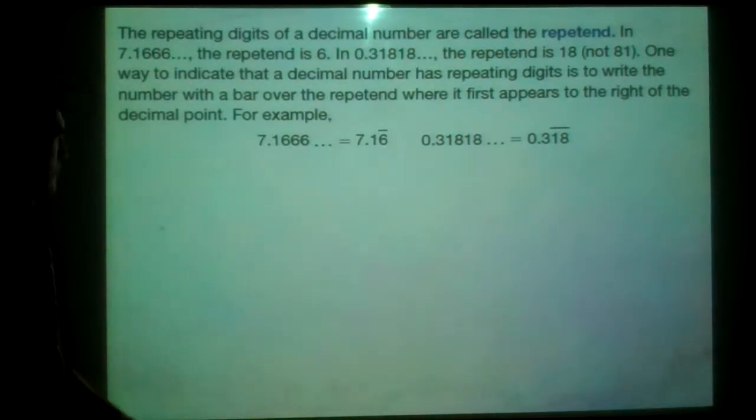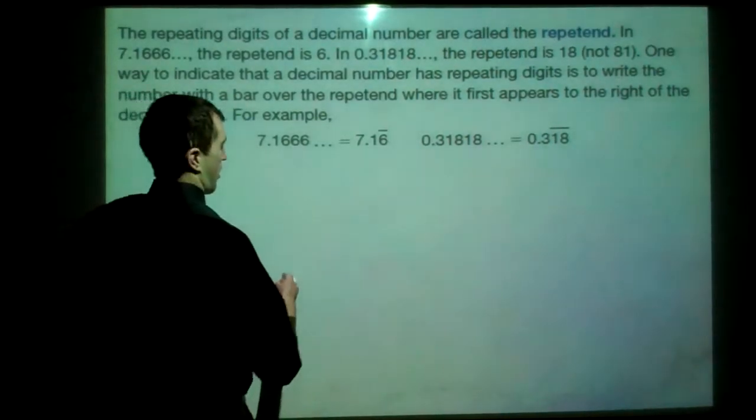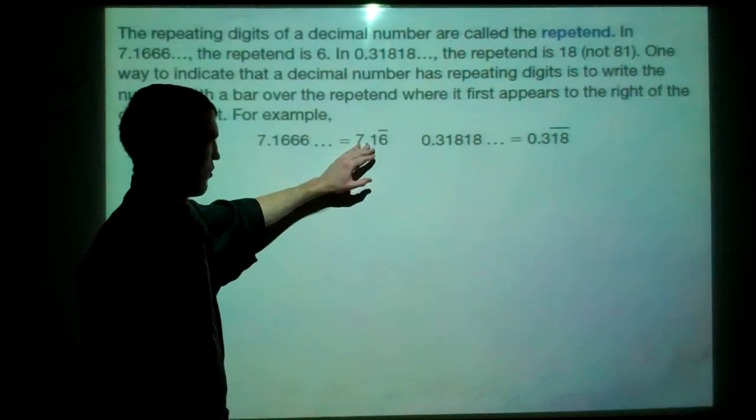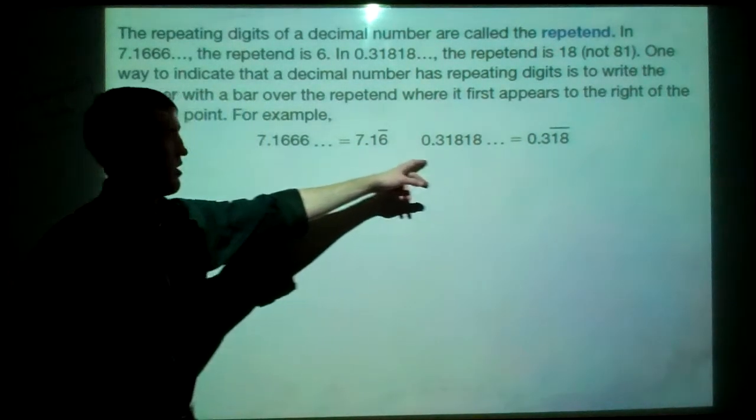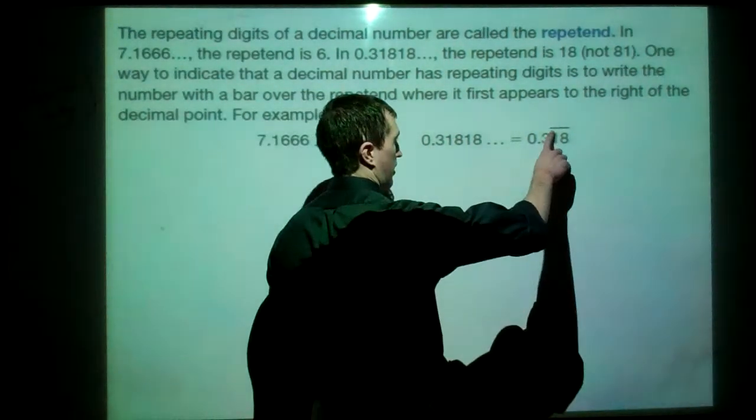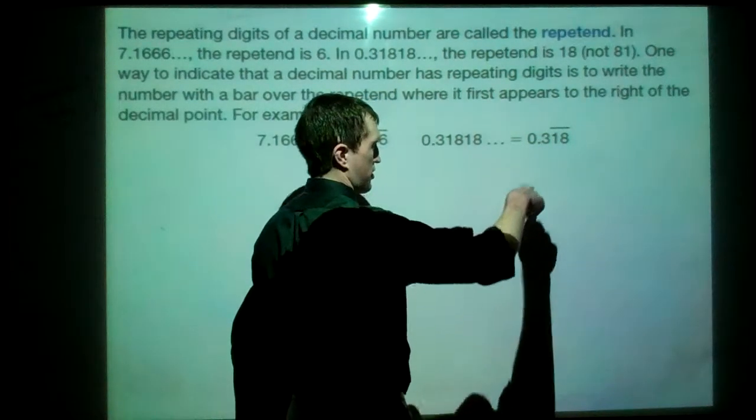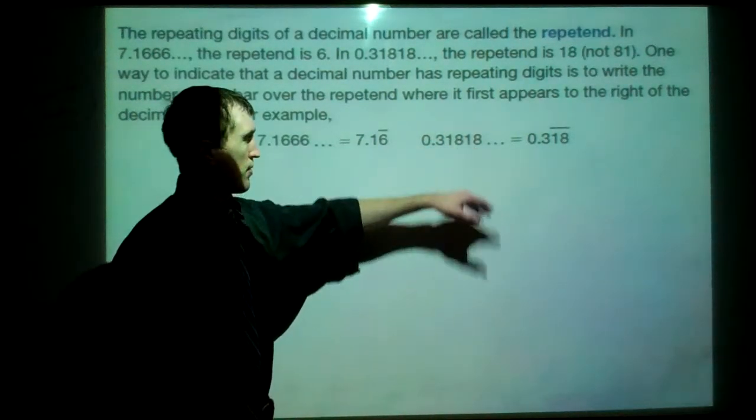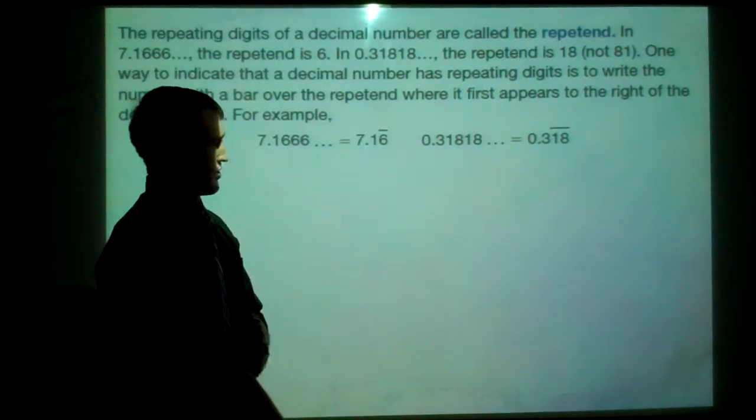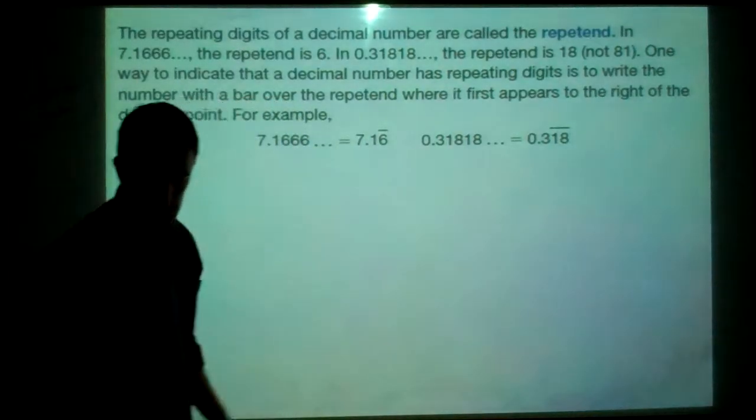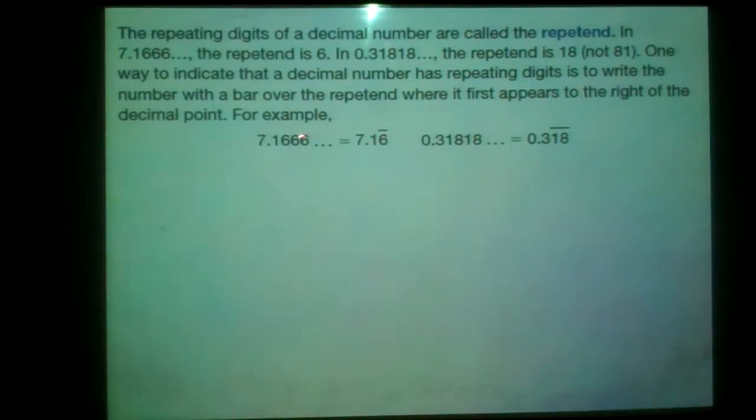For example, a shorter way to write this out would be to put this bar over the 6, because that's the thing that repeats. So the bar over the 6 tells me that we're going to have 7.1 and then the 6s that go on forever. Here, we're going to put the bar over the 1 and the 8, because the 1 and the 8 are the only things that repeat. And we see that we get a 1 first before we get an 8. And that's why the bar is over those two. We do not include the 3 in this one. We do not include the 7 and the 1 in this one. The bar only goes over the things that repeat.